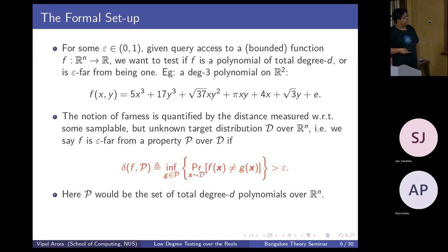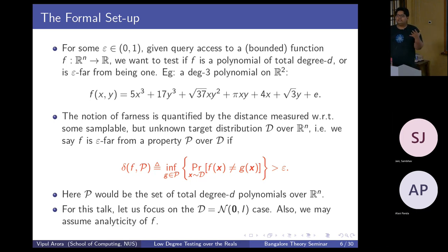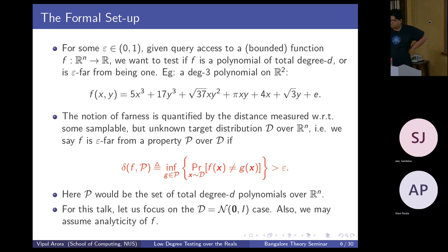For this problem, P would be the set of total degree-d polynomials. Boundedness means that the function f is bounded in a large ball — think of this as the function f not going to infinity inside a large ball. If the input is bounded then the norm of the input vectors are bounded, and therefore the function value on that vector is also bounded. That's the minimum assumption we need to make to solve this problem.